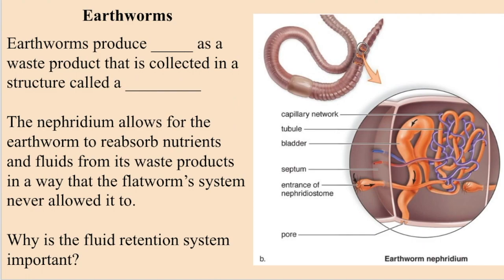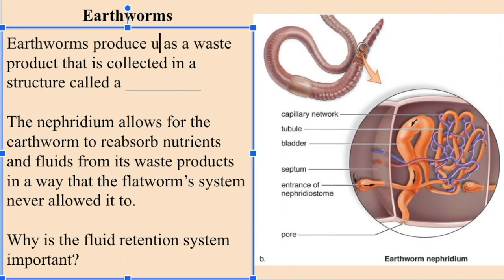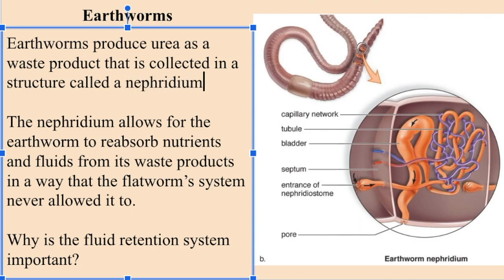Now onto our next organism, earthworms. Earthworms differ from flatworms in that they are unsegmented, and therefore their excretory system is far more complex. Earthworms do have a circulatory system that works in conjunction with their excretory system, which, like the flatworm, is also composed of long tubules. Earthworms produce urea as a waste product that is collected in a structure called a nephridium. Fluid waste from earthworm tissues is collected at the nephridium, where blood circulates around the structure so that some of the water can be reabsorbed back into the blood, maximizing the earthworm's fluid retention. Whatever is left is collected in the bladder and expelled through a pore. Notably, the nephridium allows the earthworm to reabsorb nutrients and fluids from its waste products in a way that the flatworm system never allowed.